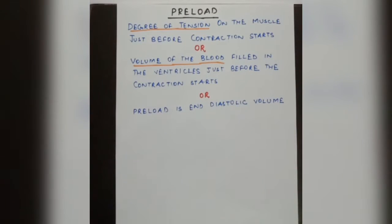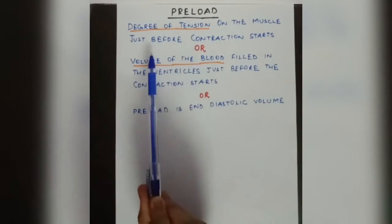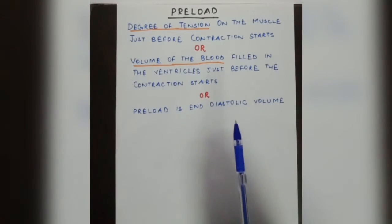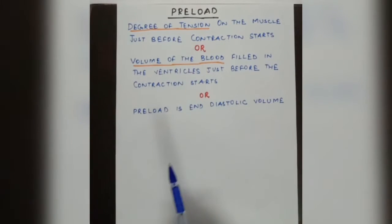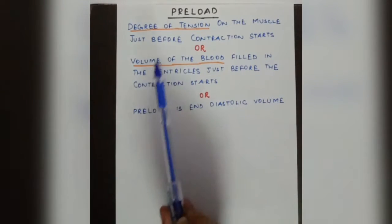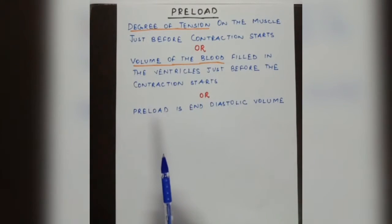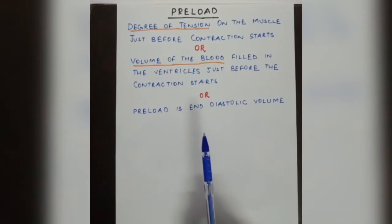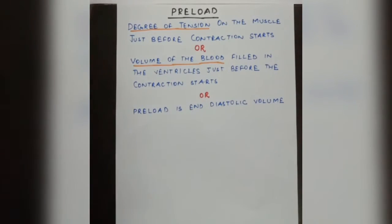The topic we are going to discuss today are preload, afterload, and Frank-Starling law. Starting with preload — what is preload? It is the degree of tension on the muscle just before contraction starts. In the cardiac muscle case, this definition is the volume of blood filled in the ventricles just before contraction starts, which we call preload.